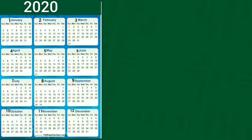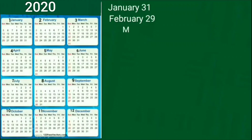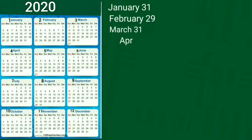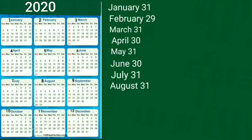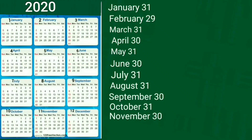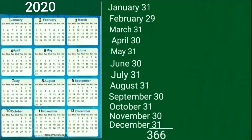Now, students, I have a calendar of year 2020. 2020 is a leap year. See how many days are in 2020: January 31, February 29, March 31, April 30, May 31, June 30, July 31, August 31, September 30, October 31, November 30, December 31. The sum of these is equal to 366. This is a leap year — February month has 29 days. So, in a leap year there are 366 days.